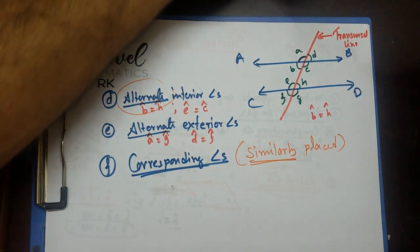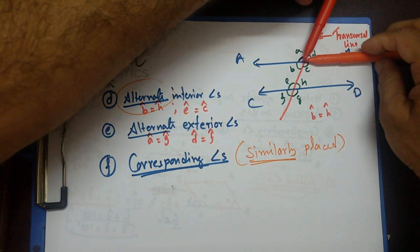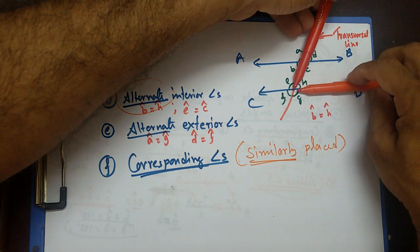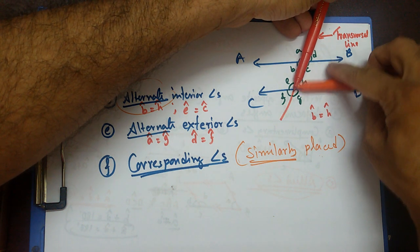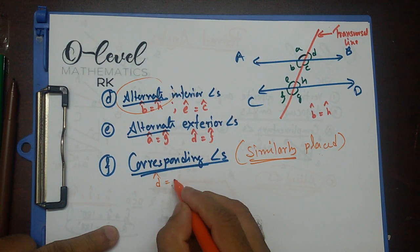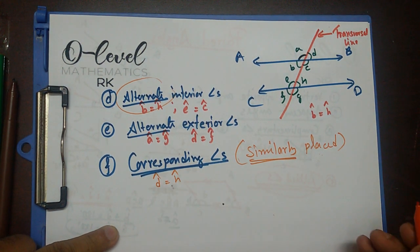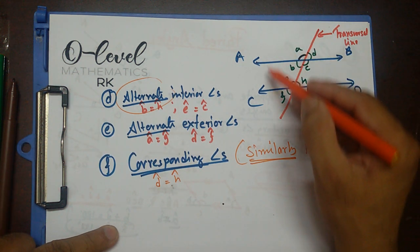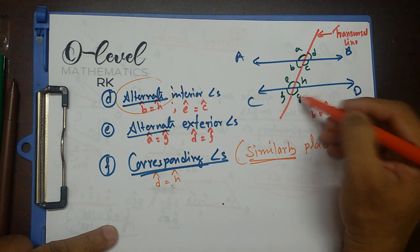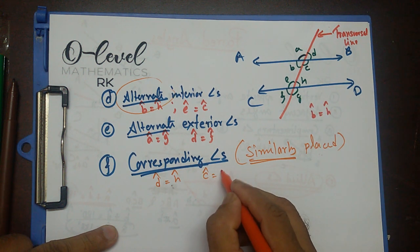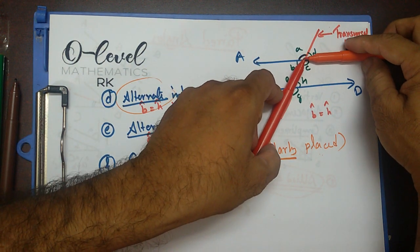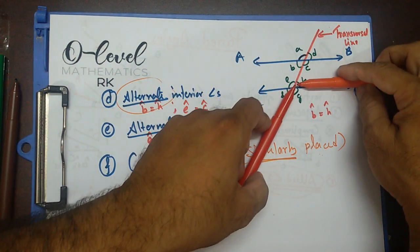Think about angle D — these two line segments form angle D. If I slide it down, it comes to a new position at H. So angle D equals angle H, and they are corresponding angles.